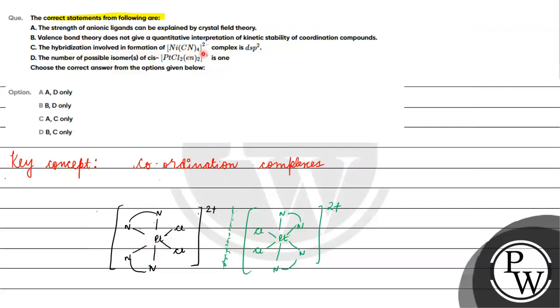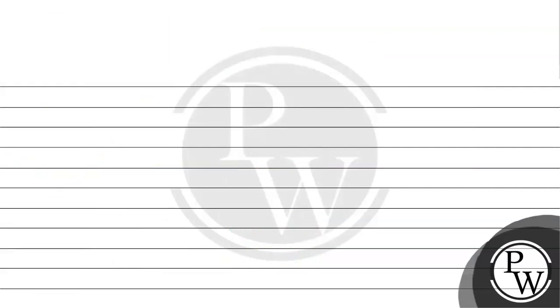Then we have the hybridization of NiCl4(2-). For hybridization of NiCl4(2-): x + 4(-1) = -2, so x = -2 + 4. Nickel's oxidation state is +2.